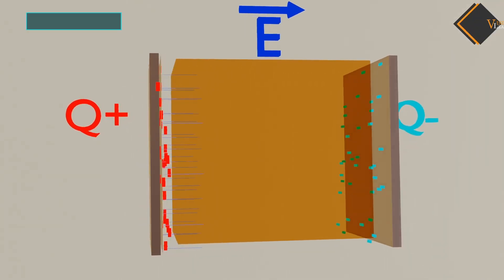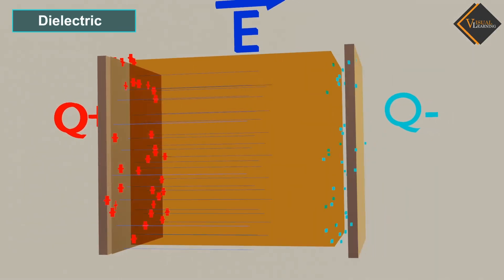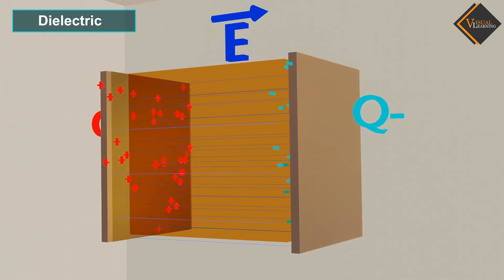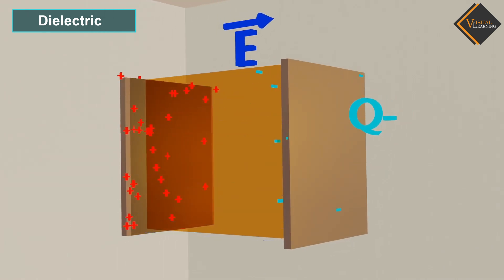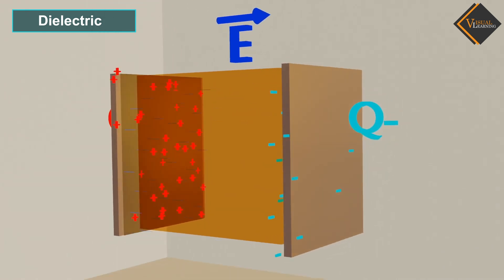In this video, we will understand dielectric. A dielectric is a material used in electrical and electronic devices to insulate and separate electric charges. It also has the ability to store electrical charges.